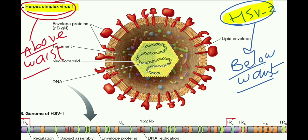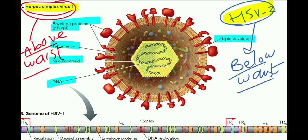Like any other virus, the HSV virus contains basic components: a lipid envelope, envelope proteins, the tegument, the nucleocapsid, and DNA inside. At different sites of this virus we have regulatory sites — capsid assembly, envelope protein, and DNA replication sites. We are not discussing the genomic study of this virus in detail.